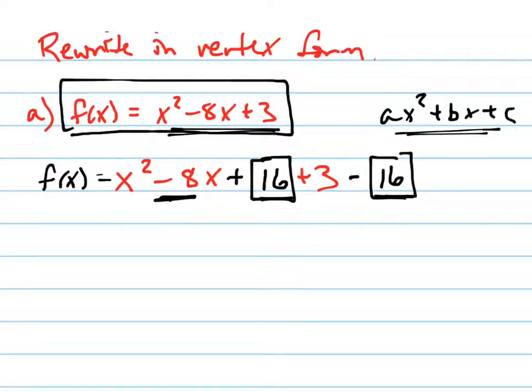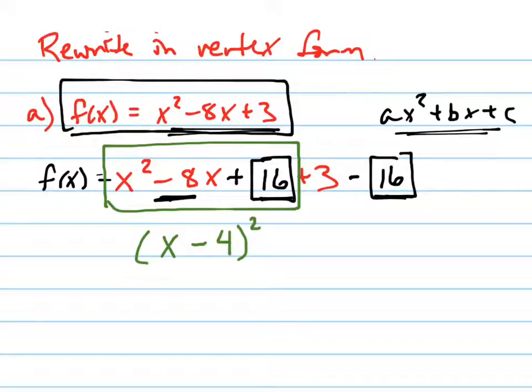So f of x equals that. Now watch what happens to this right here. This thing right here is a perfect square trinomial. It factors into x minus 4 squared.